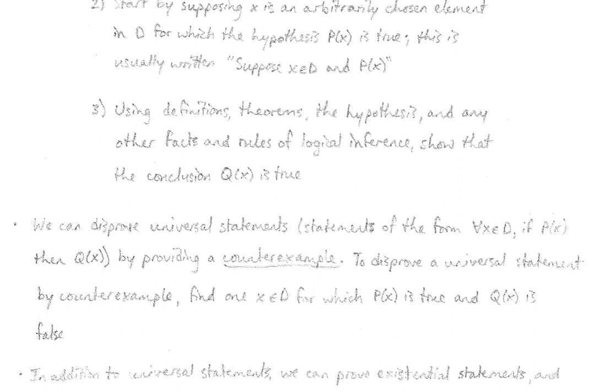And those are for universally quantified statements for all x in some set, or for all x and y in some set. We can disprove statements of this type. We can disprove universal statements by providing a counterexample. That's nothing new, we've seen this before. We've actually done some samples in the previous video where we've actually disproved universal statements.